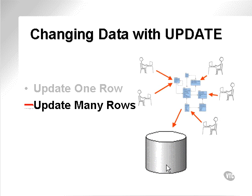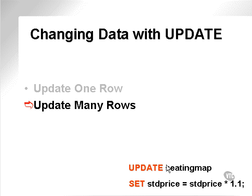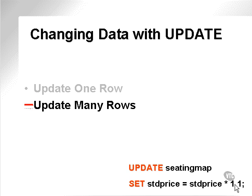The second type of update statement is one which changes many rows at the same time. Here's an example of an update statement changing many rows. This update statement will actually change all the rows in the seating map table because there is no filtering WHERE clause.